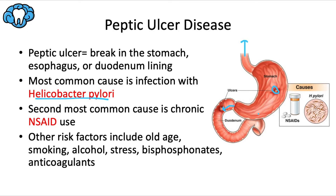The second most common cause is chronic NSAID use, which is important for us because we prescribe NSAIDs fairly often. NSAIDs block cyclooxygenase-1, which inhibits prostaglandin production — prostaglandins normally help protect the stomach lining — once again weakening the lining's defense. Other risk factors include old age, smoking, alcohol consumption, physiological stress, the use of nitrogen-containing bisphosphonates, and some anticoagulants.